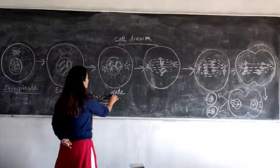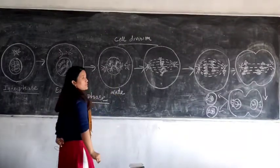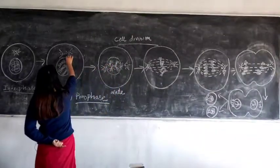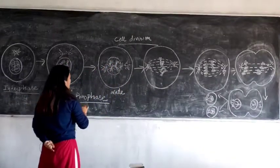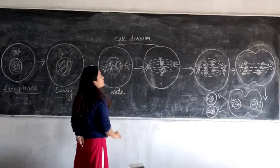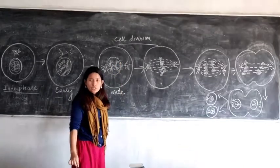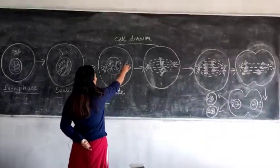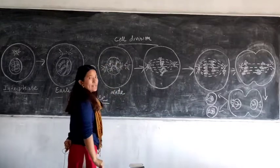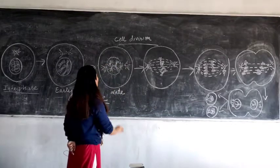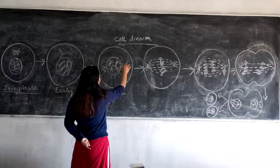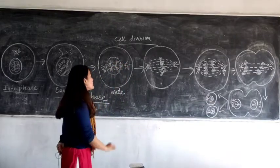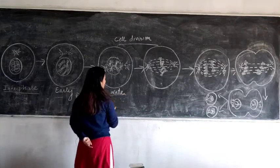In late prophase, the distinct feature observed is that the nuclear membrane, which was continuous in early prophase, begins disintegrating. The centrioles, which have duplicated, move to the polar region, and you can see the formation of spindle fibers to which the chromosomes are attached.